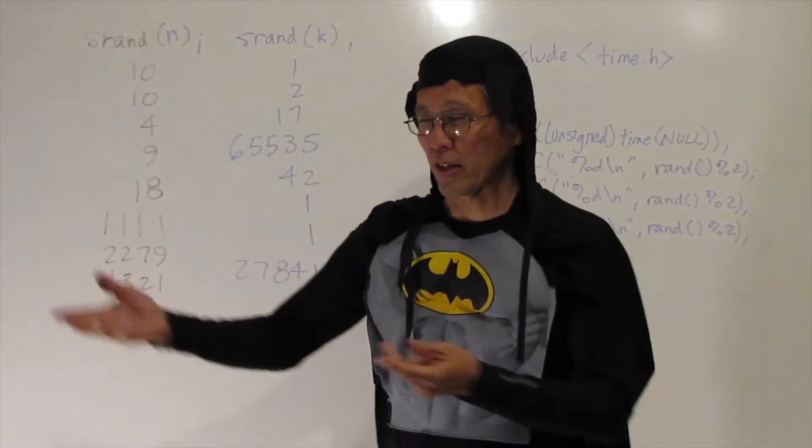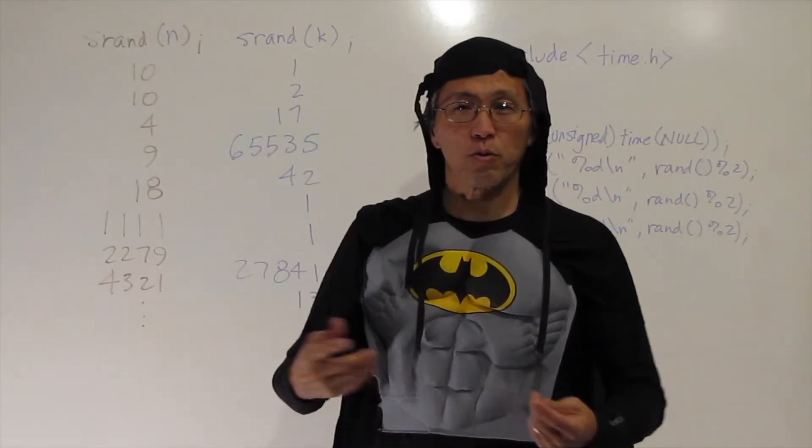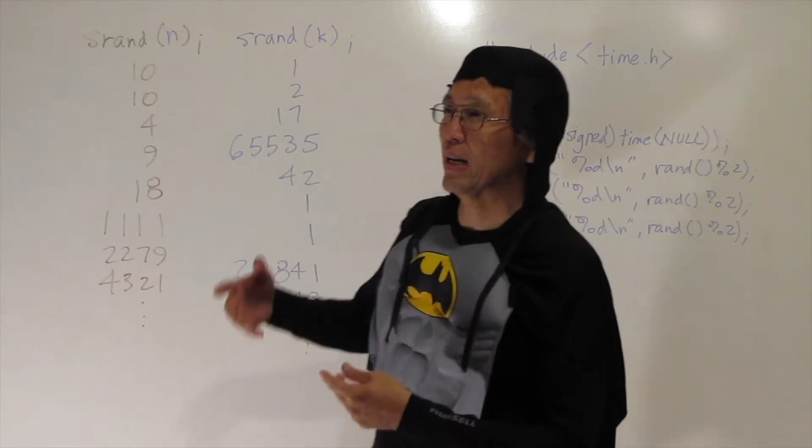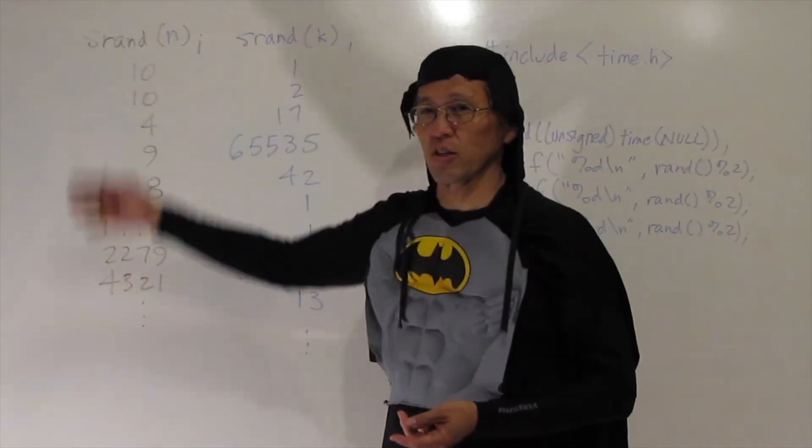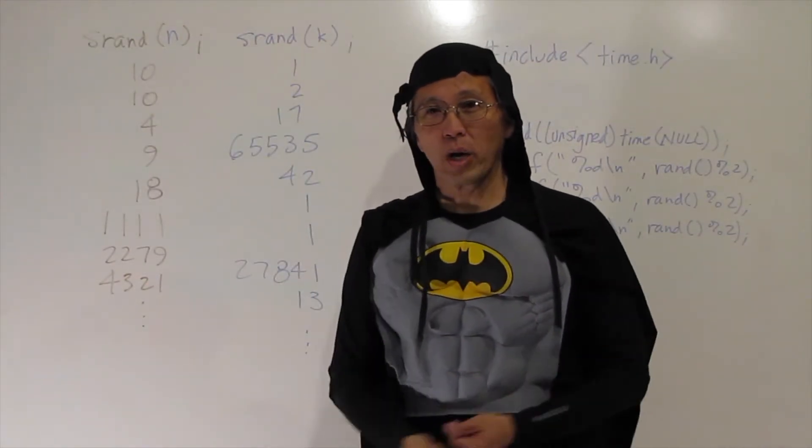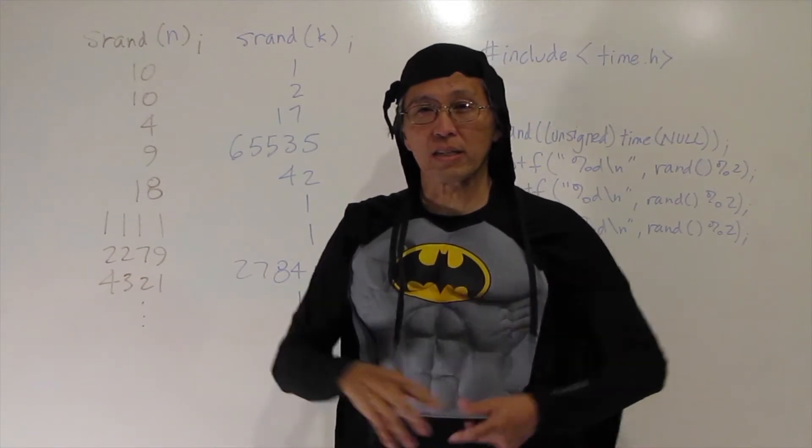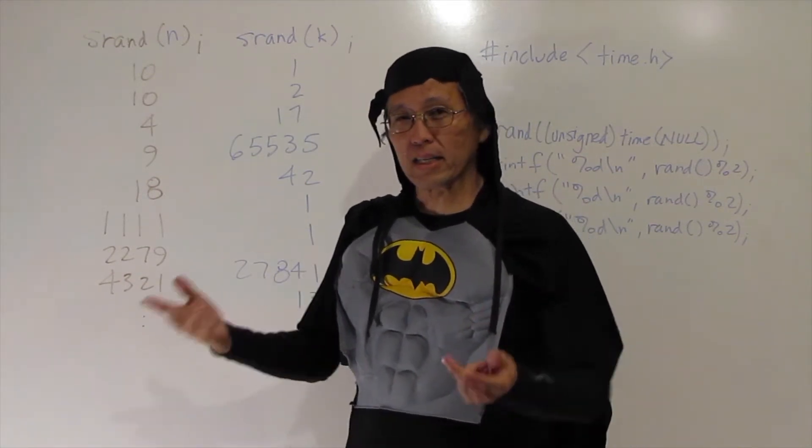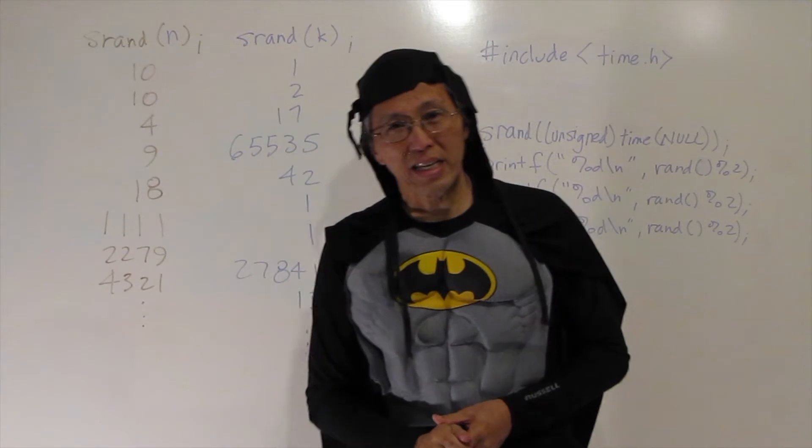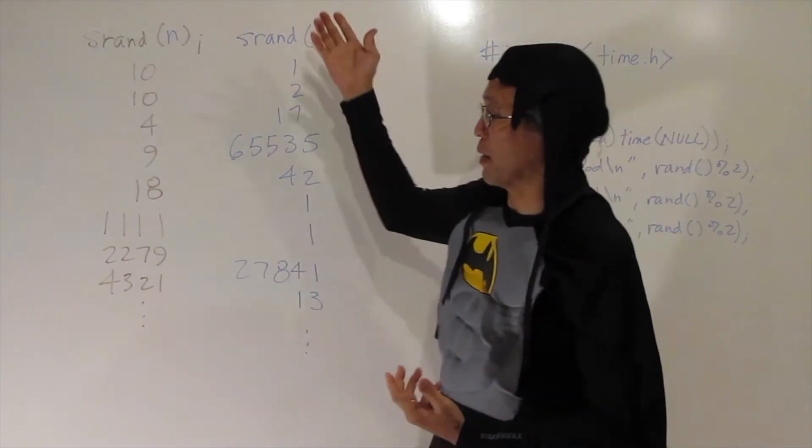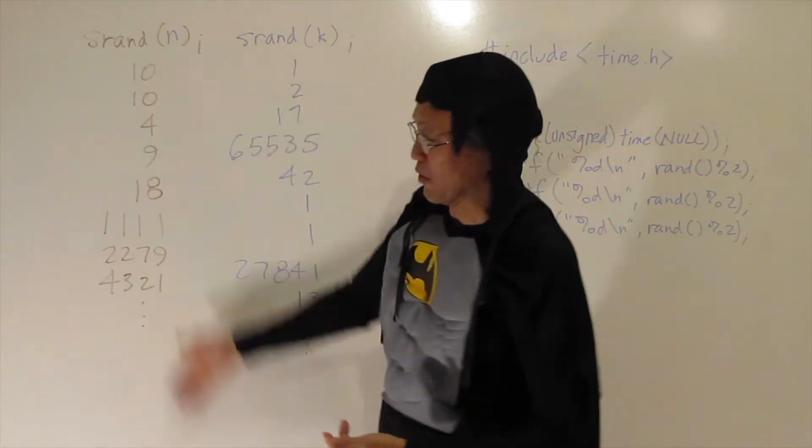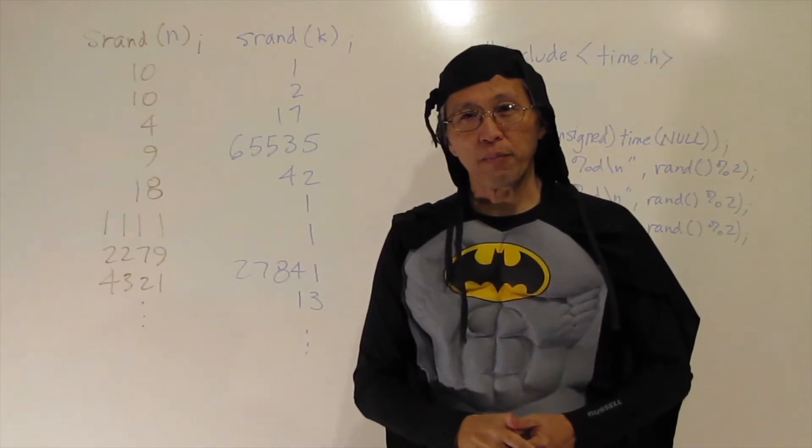Now, a seed, if we're in the garden, we would plant a seed and it would grow a flower. Well, a seed in random numbers is just the starting point. It's what tells you which random number list to use. A random number list generated by a seed is going to be an infinite list essentially of numbers.